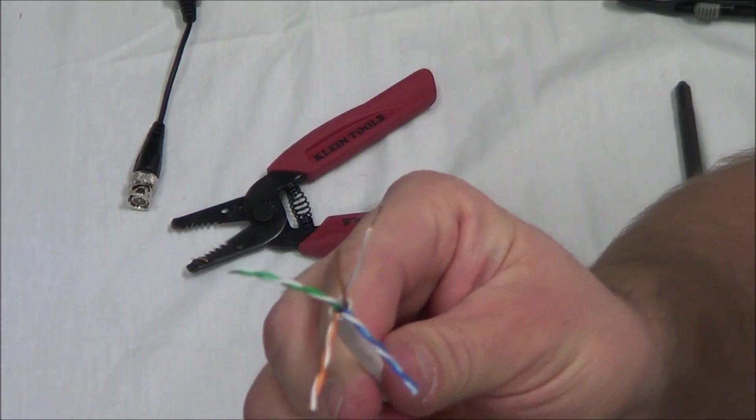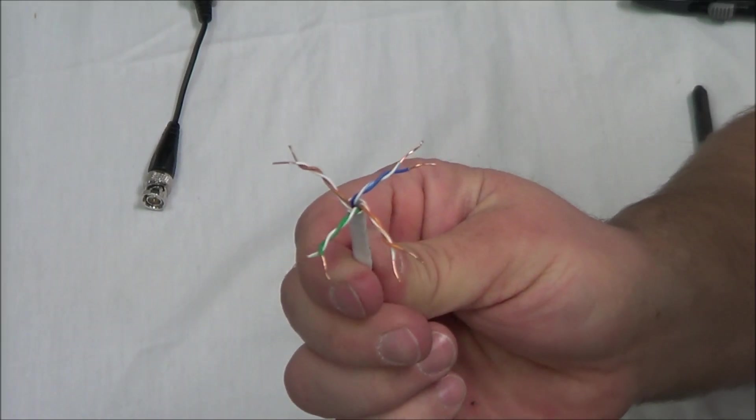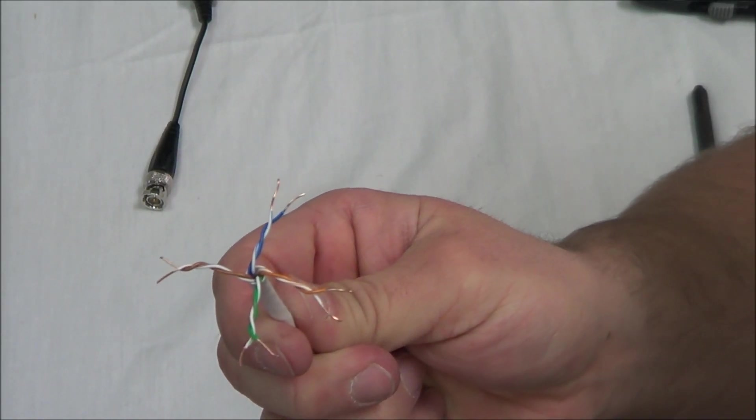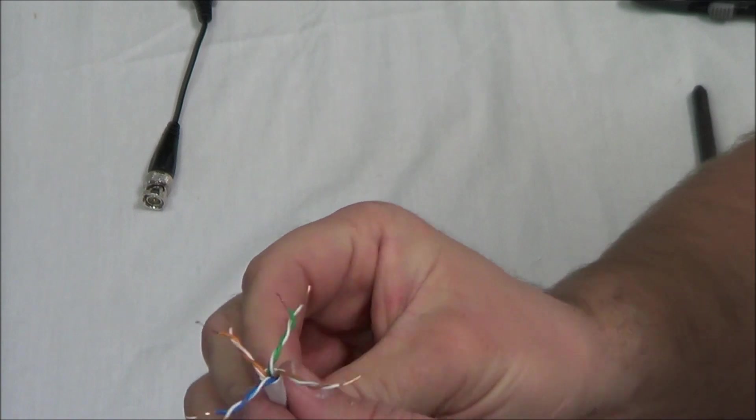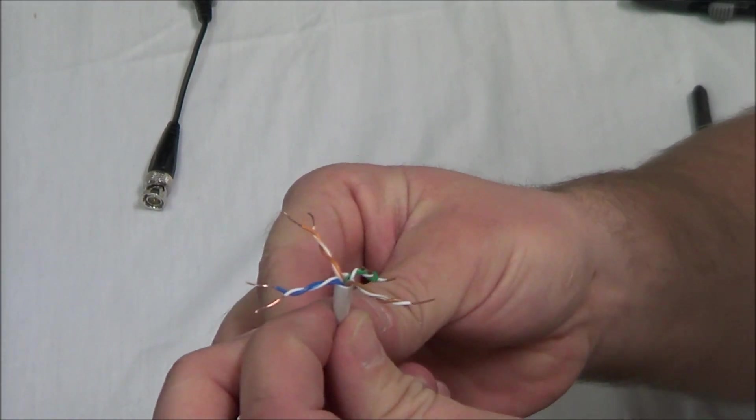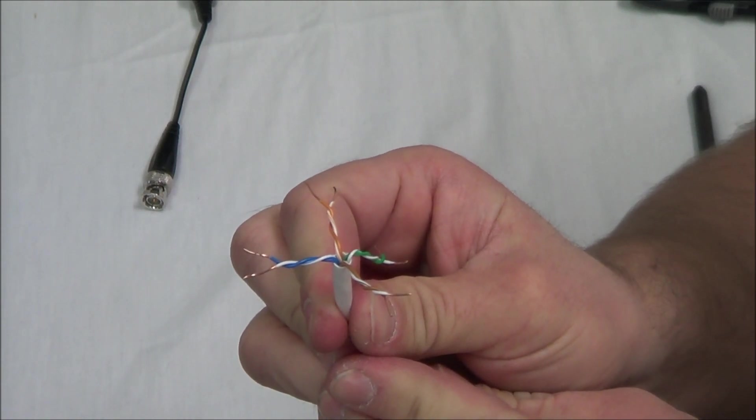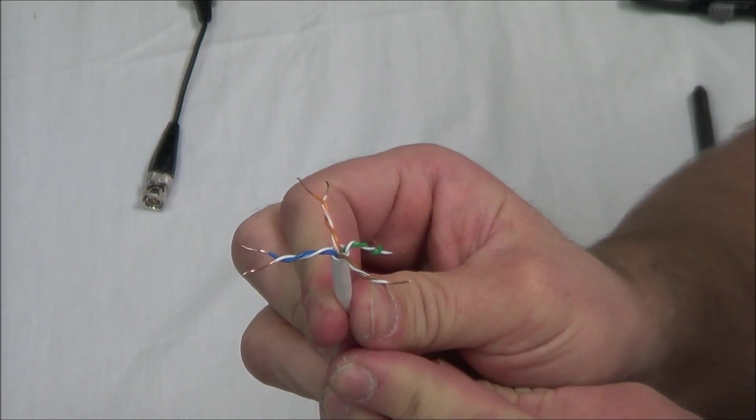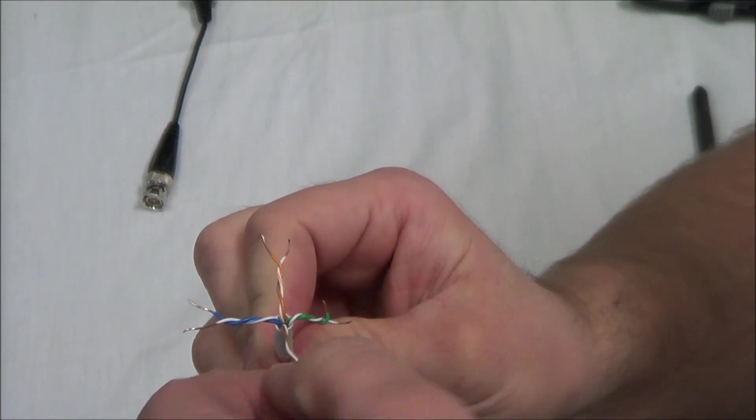And we're going to go ahead and strip all those. All right, now that we have them stripped down, what we're going to do, except for the green, because that's going to be our video, we're going to untwist these and we're going to attach all the solid colors together and all the striped colors together. So, let's separate them out.